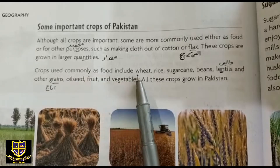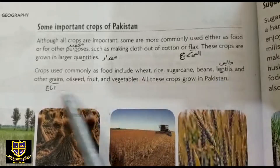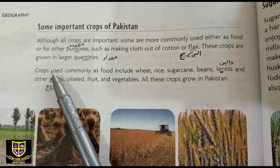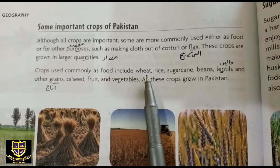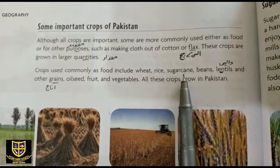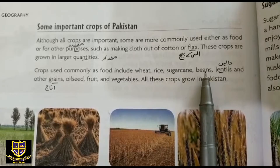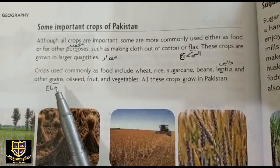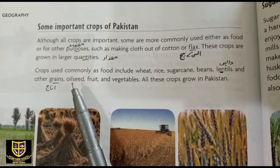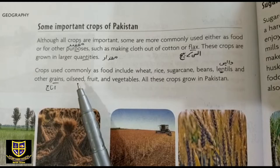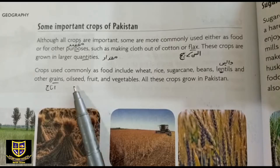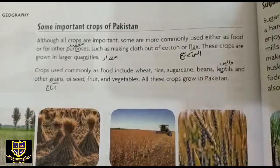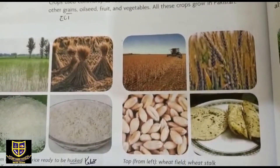Crops used commonly as food include wheat, rice, sugar cane, beans, lentils and other grains, oil seeds, fruits and vegetables. تو جو عام فصلیں ہمارے ملک میں خوراک کے طور پر استعمال ہوتی ہیں وہ ہیں گندم، چاول، گنہ، دالیں، اور مختلف قسم کے اناج۔ Oil seeds جیسے سرسوں کے بیج سے تیل نکالتے ہیں۔ Fruits and vegetables مختلف قسم کے پھل اور سبزیاں — یہ سارے ہمارے ملک میں پائے جاتے ہیں۔